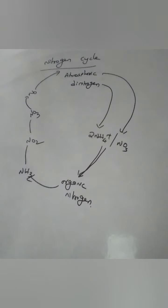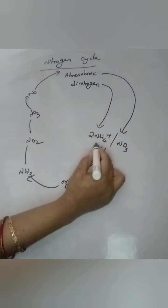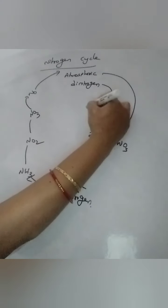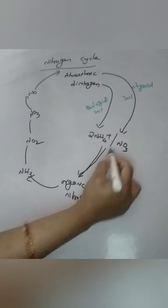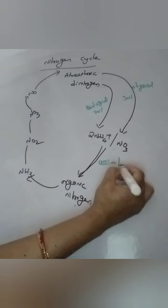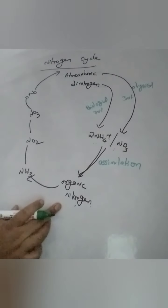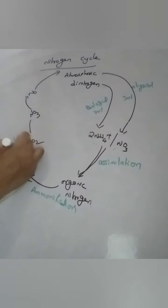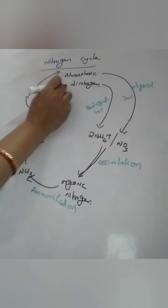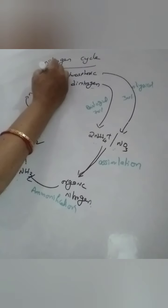This is the complete nitrogen cycle. Atmospheric nitrogen is converted into ammonium or nitrate form through biological or physical processes. In biological processes, about 70% of nitrogen is converted. This ammonium and nitrate is then converted into organic nitrogen — that is nitrogen assimilation. Organic nitrogen is then converted into ammonia — that is ammonification. Ammonia is converted into nitrite, then nitrate — that is nitrification. Finally, these are converted back into atmospheric dinitrogen — that is denitrification.